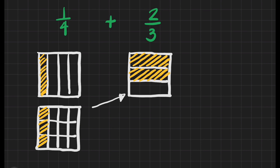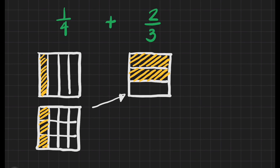We'll count the number of shaded parts — that's 1, 2, and 3. It means this is 3 shaded parts out of 12.